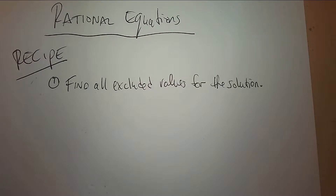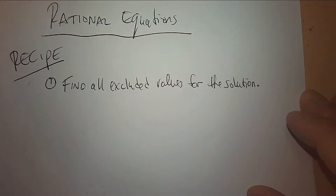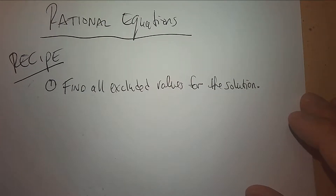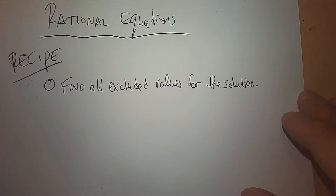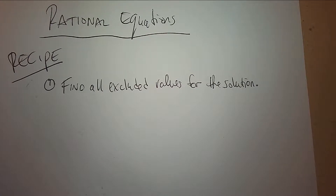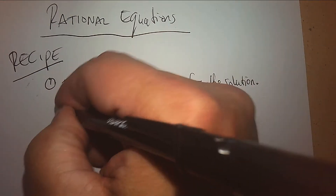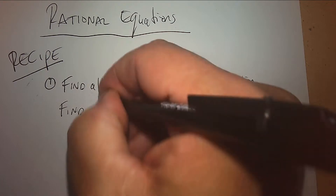Before we get to the learning packet, we're going to do a little work beforehand so we know the steps we're going to follow. Step one: find all excluded values for the solution. When you solve a rational equation, there are some answers that are not allowed. You could do all the algebra correctly and the answer at the end is still wrong, and you cross it out. So why would there be excluded values? We need to find all zeros of the denominator.